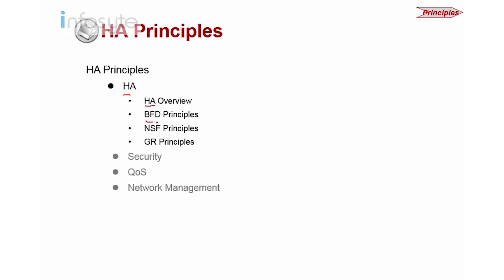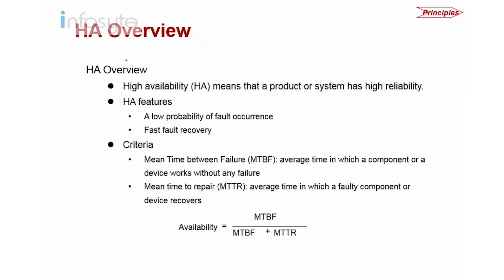We will look into BFD — Bi-Directional Forwarding Detection — non-stop forwarding principle, and graceful restart. Now, how do we define HA or high availability? HA means that a product or system has high reliability. The features of HA include low probability of fault occurrence, meaning the chances of the system breaking down are very low, and if it does break down, recovery must be fast.